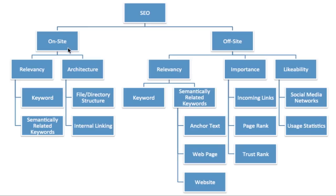On-site can be further dissected into two subcategories: relevancy and architecture. By relevancy, we mean relevancy to a particular key term or phrase. Those are frequently referred to as keywords, and we also mean semantically related keywords. Google and the other search engines are sophisticated enough that they know about the different relationships that exist between one word and another word.